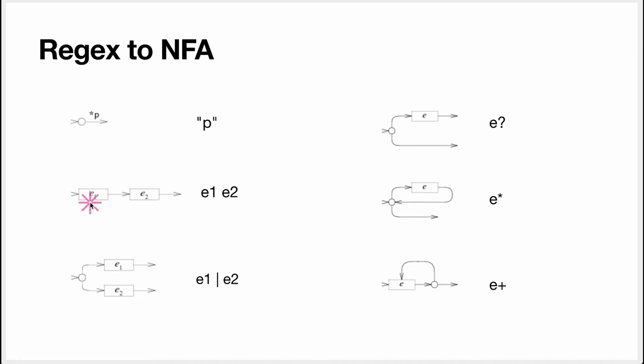Okay, let's put it all together. Let's do the case of a sequence. You take e1, you compile it, you insert the automaton there, then you add an empty transition from the accepting state of e1 to the starting state of e2, and then you add an empty transition from the accepting state of e2 to a new accepting state for the sequence.